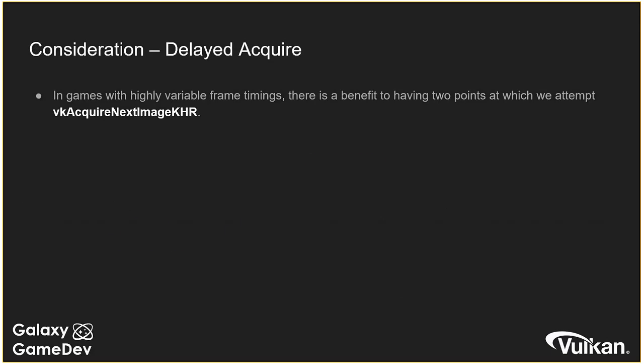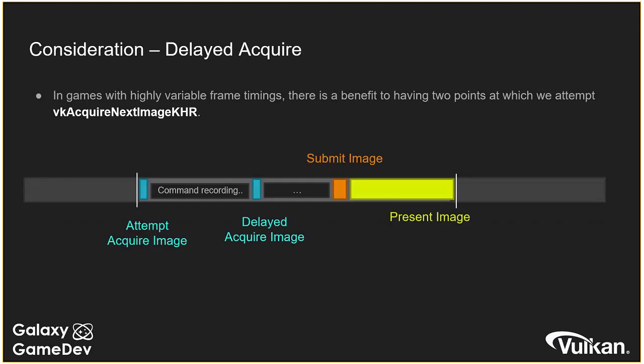A good way of dealing with acquire is what we call a delayed acquire. In most game environments, you only really need to know the image index at the very end of your render workload — normally just for that final render where you're rendering to the swap chain image. We can delay acquire as long as possible to give the system enough time to ensure the image is available. We also have the option of attempting acquire early to start encoding and preparing Vulkan objects ahead of time, which can smooth out frame rates.